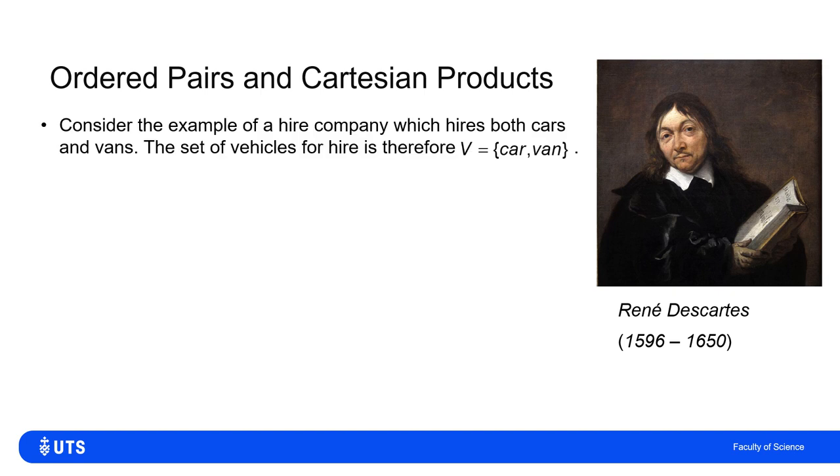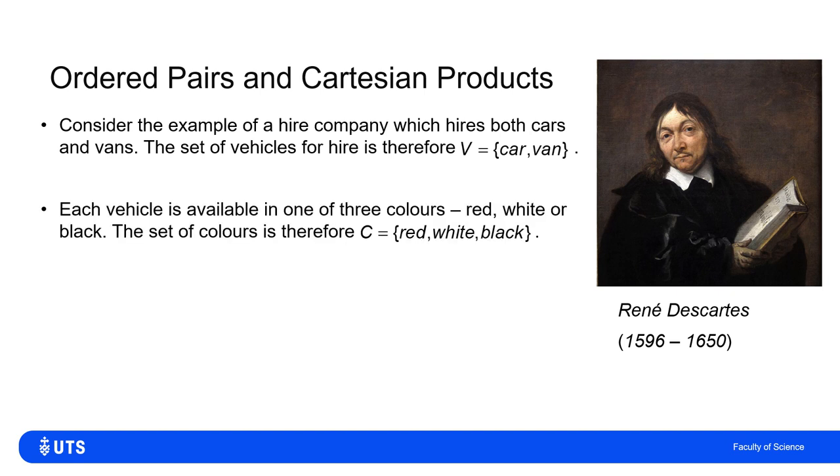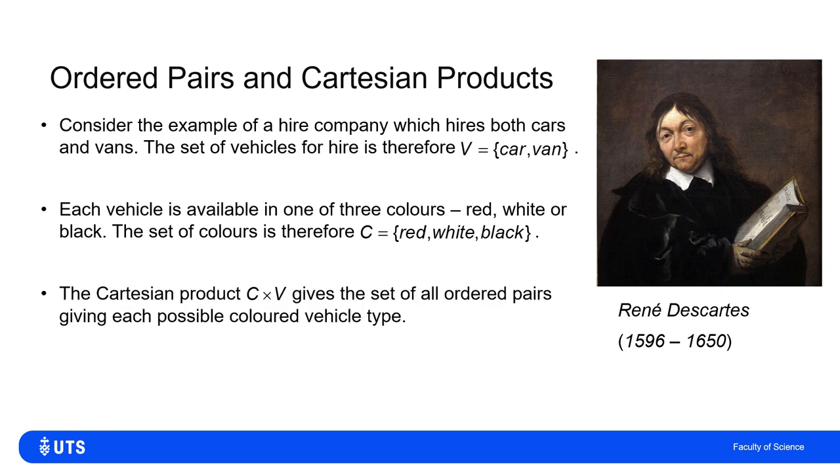So if I take the example of a hire company which has cars for hire and vans for hire, the set of vehicles I can denote as V = {car, van}. Each vehicle is available in one of three colors: red, white, or black, so I can denote the set of colors C as {red, white, black}. Notice the set V would be the same if I wrote it as {van, car} or {car, van} - it doesn't matter. Similarly with colors.